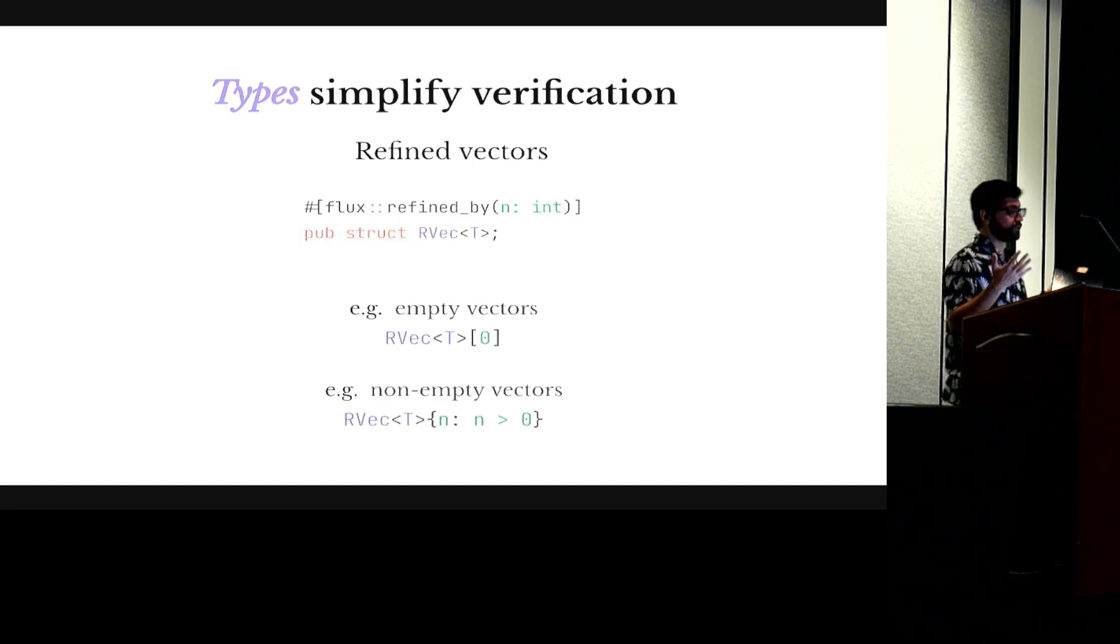So these vectors are indexed by the length, by an integer which is supposed to represent their length. So this is how I will for example define empty vectors by indexing them by zero, or non-empty vectors by using an existential type.